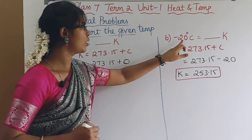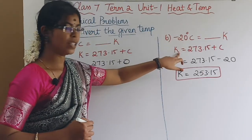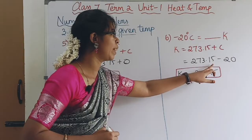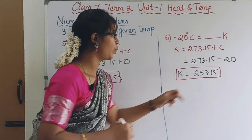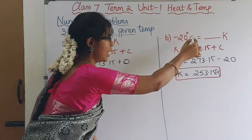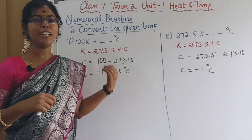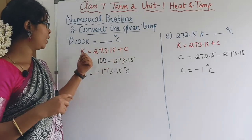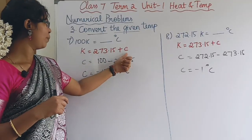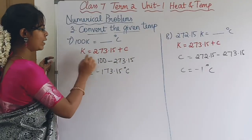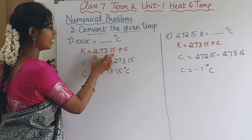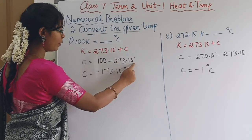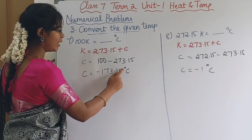For minus 20 degrees Celsius: K = 273.15 + (-20) = 253.15 K. So minus 20 degrees Celsius equals 253.15 K. Next, convert 100 Kelvin to degrees Celsius using K = 273.15 + C. Rearranging: C = K - 273.15 = 100 - 273.15 = minus 173.15 degrees Celsius.